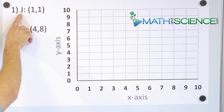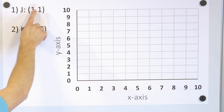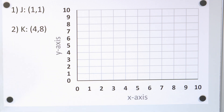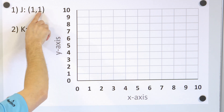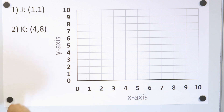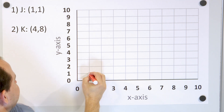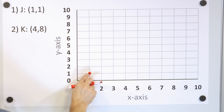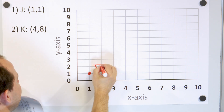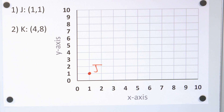If we want to plot the location of J, we need to look at the ordered pair. The first number is x and the second number is y. So x is 1, we go over on the x-axis to 1, and the y value is also 1, so we go up one unit. The location of this point is right here at x equals 1 and y equals 1, and the label is J.